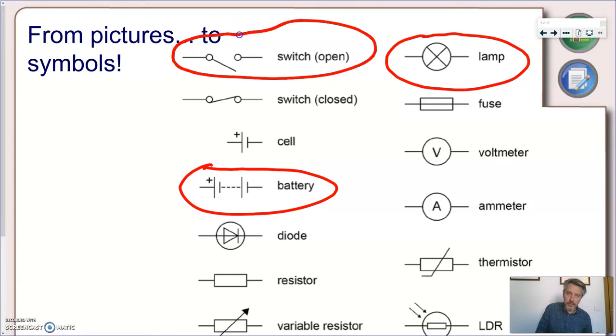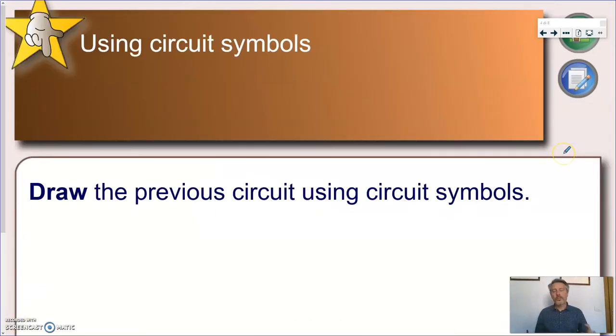Okay so now we're ready to represent the same circuit but using symbols. When you draw circuits using symbols one of the most important conventions is that the cables that you're using to connect the different components are represented with straight lines, but not straight lines going in any random direction but straight lines which should be either horizontal or vertical.